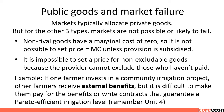Public Goods and Market Failure: Markets typically allocate private goods, but for the other three types, markets are not possible or are likely to fail. Non-rival goods have a marginal cost of zero, so it is not possible to set price equal to marginal cost unless provision is subsidized. It is impossible to set a price for non-excludable goods because the provider cannot exclude those who haven't paid. If one farmer invests in a community irrigation project, other farmers receive external benefits but it is difficult to make them pay or write contracts that guarantee a Pareto-efficient irrigation level.